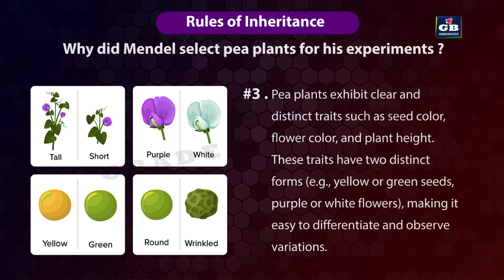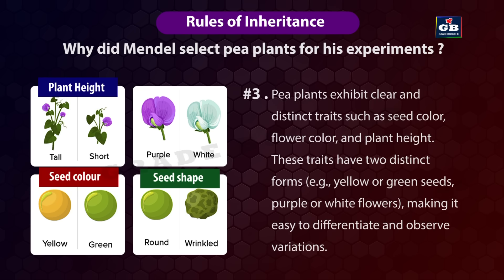Third, pea plants exhibit clear and distinct traits such as seed color, flower color, and plant height, each with two distinct forms — yellow or green seeds, purple or white flowers — making it easy to differentiate and observe variations. Fourth, Mendel used contrasting characters such as plant height (tall or short), seed color (yellow or green), seed shape (round or wrinkled), and flower color (white or purple).